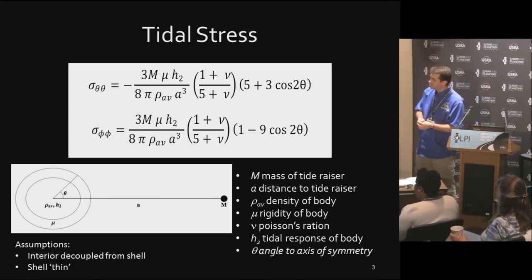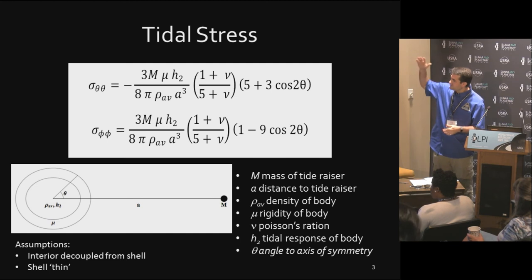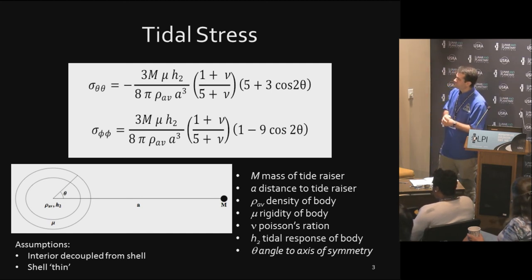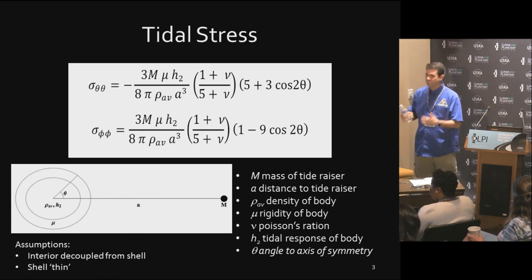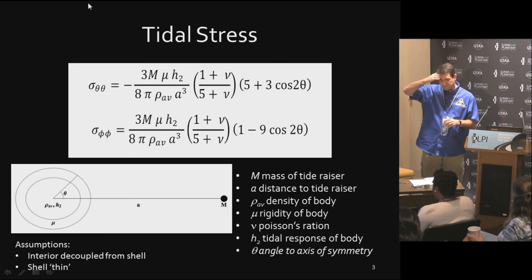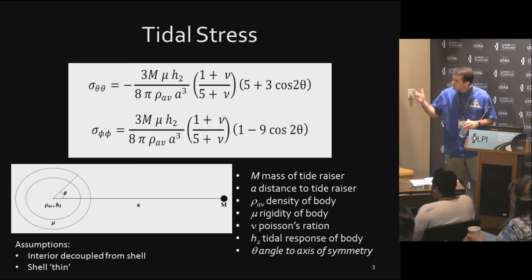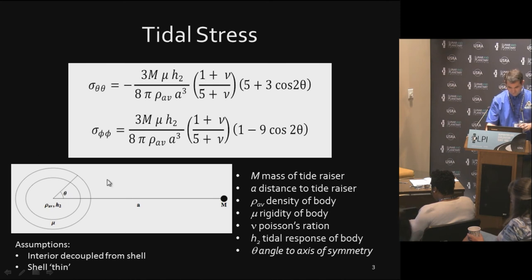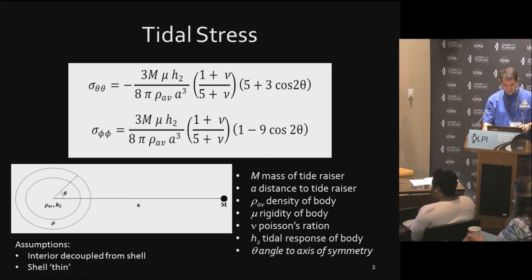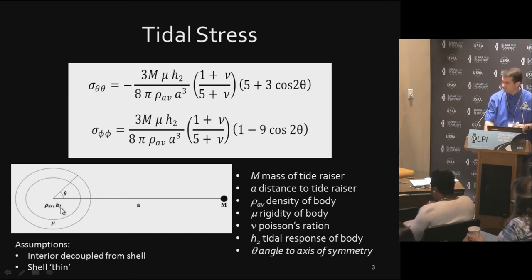We start with the equations of the tidal stresses in a thin shell, which are very simple and analytical. There are cases where the thin shell approximation probably isn't great, and you could use a more complicated formula. These stresses are on the surface of the sphere — here's a picture of our deformed planet with a primary at distance A away. The closer it is, the higher a tide will be imparted onto its surface. In the thin shell approximation, the height of the tide depends on the average density of the body, how much it tidally responds given by the H2 love number, and the rigidity of the outer layer being flexed.